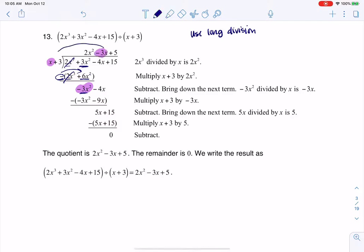And then again, just like before, I'm going to multiply this to both terms in that divisor. Negative 3x times x is negative 3x squared. Negative 3x times 3 is negative 9x. And then I have to remember to subtract that entire term.